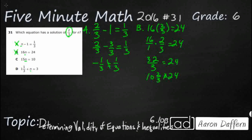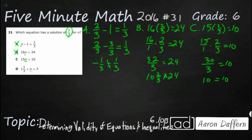Let's take a look at option C: 15n equals 10. So 15 times 2 thirds — let's do 15 over 1 times 2 over 3 and see if that equals 10. 15 times 2 is 30, and 1 times 3 is 3. That gives us 30 divided by 3, which is 10. 10 equals 10 — that looks like it's probably going to work.